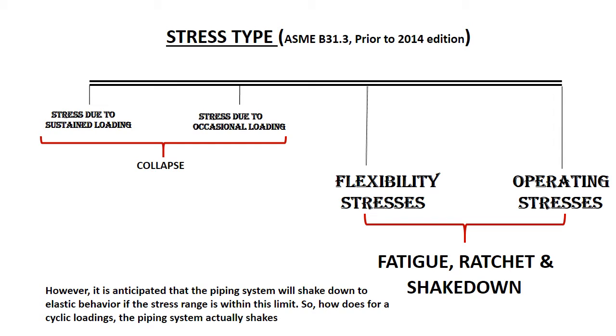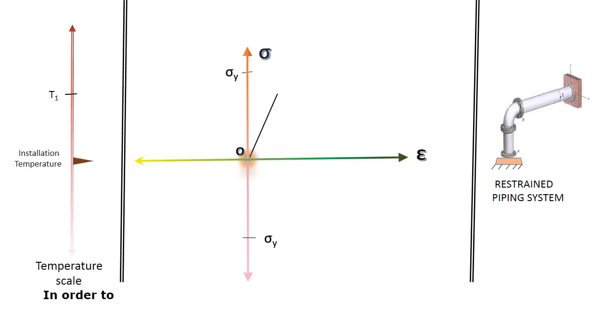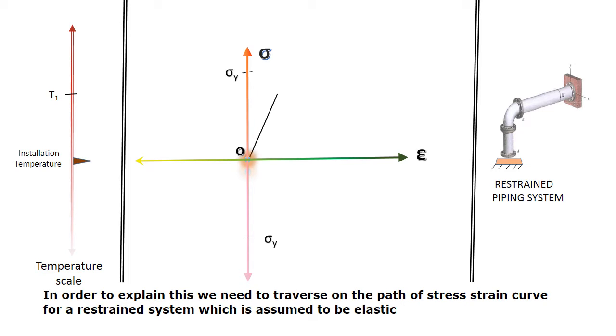So how does for the cyclic loading, the piping system actually shake down? In order to explain this, we need to traverse on the path of stress-strain curve for a restrained system which is assumed to be elastic till its yield point and is perfectly plastic when the deformation or yielding starts.